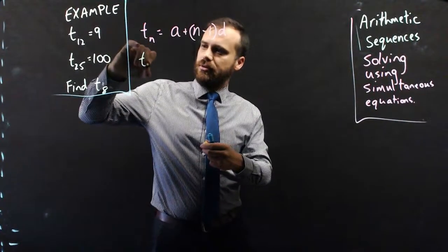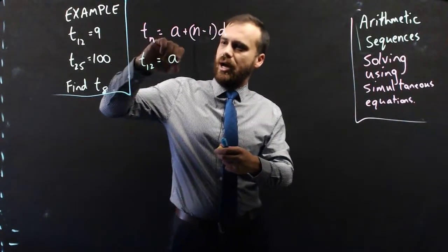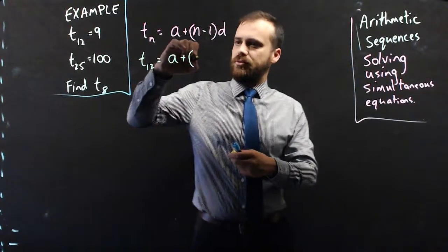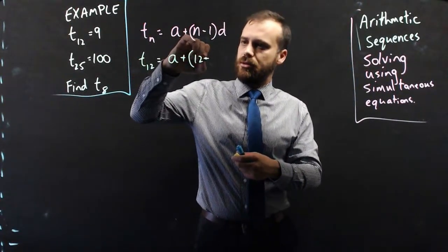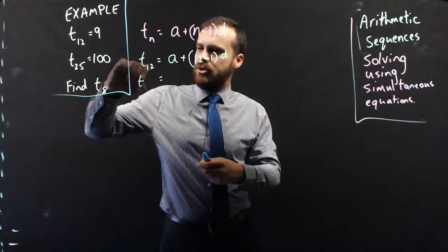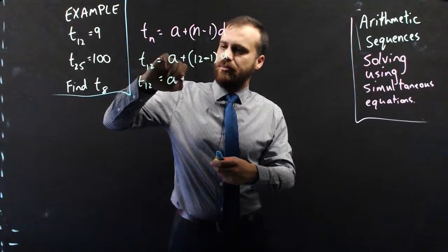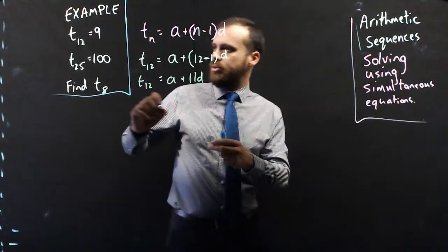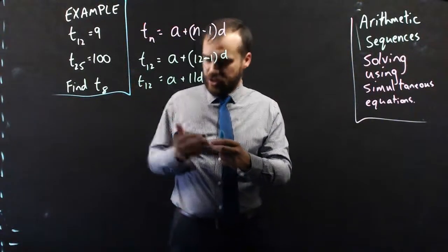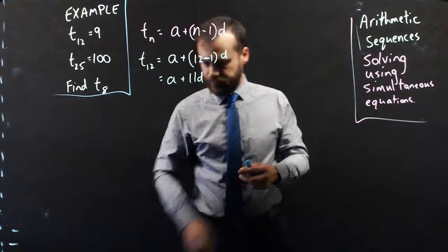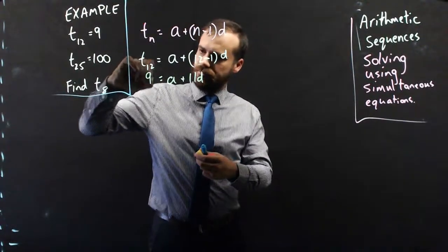We know that term 12 is equal to a plus n minus 1, so n is 12, so 12 minus 1, d. In other words, term 12 is equal to a plus 11d. And we know that term 12 is actually 9.